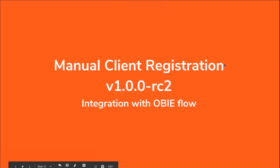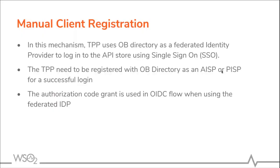Now I am going to talk about the manual client registration flow in version 1.00RC2. The manual client registration, also known as integration with the OBIE flow, uses the OB directory as a federated identity provider to login to the API store using single sign-on. The TPP needs to be registered with the OBIE directory as an AISP, PISP, or CBPII and obtain an SSA for a successful login.